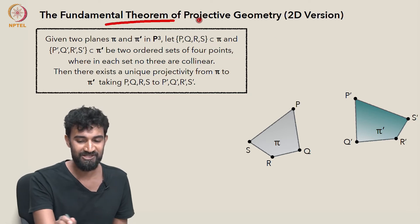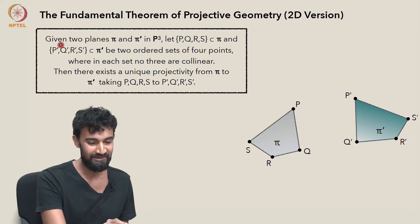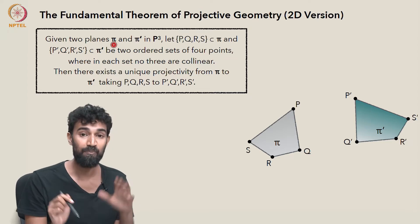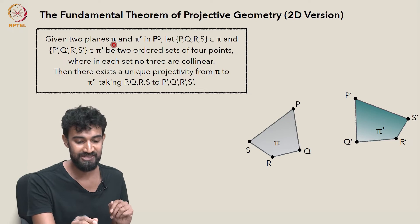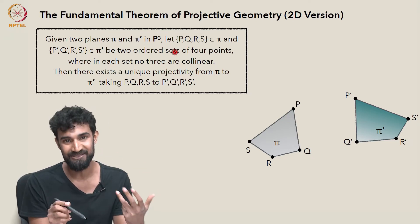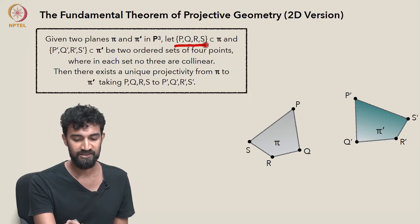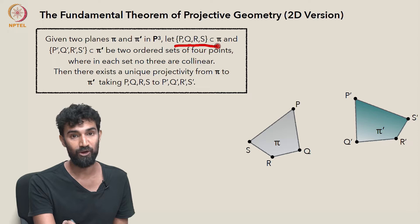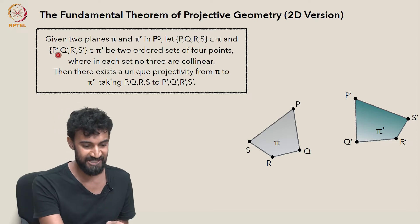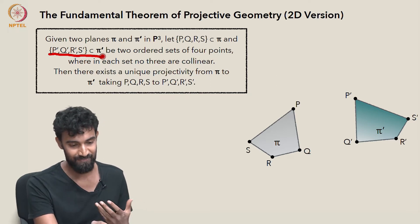What is the fundamental theorem saying in 2D? It's saying the following. Let's take two planes, π and π prime, sitting in P3. These are extended planes because they're sitting in P3. Let P, Q, R, and S be four points in π. And let P prime, Q prime, R prime, and S prime be four points in π prime.